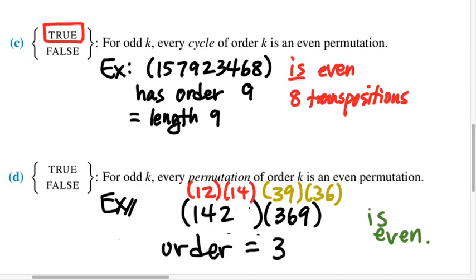So yes, every permutation of order k, if k is odd, all of the disjoint cycles that make it up have to be disjoint cycles of odd length, and therefore odd order. But then each one of those cycles, because its length is odd, we can write it with an even number of transpositions.